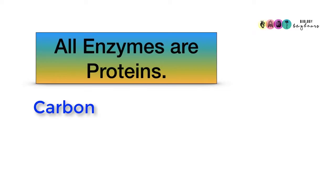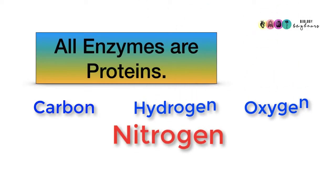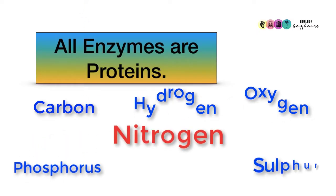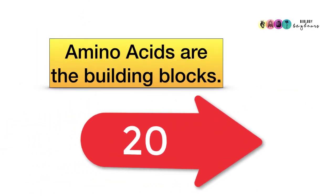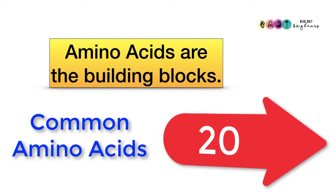All enzymes are proteins, therefore they must contain the elements carbon, hydrogen, oxygen, always nitrogen, sometimes phosphorus and sometimes sulphur. Enzymes being proteins are made up of amino acids, and remember there are 20 common amino acids.